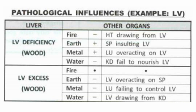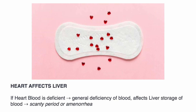Here we see the pathological influences. In liver deficiency: the heart is drawing from the liver, the spleen insults the liver, the lung over-acts on the liver, and the kidneys fail to nourish the liver. In liver excess: the liver will over-act on the spleen, the lung fails to control the liver, and the liver is drawing from the kidneys. Heart affects the liver: if heart blood is deficient, it can lead to general deficiency of blood, which affects the liver's storage of blood, causing scanty periods or amenorrhea.